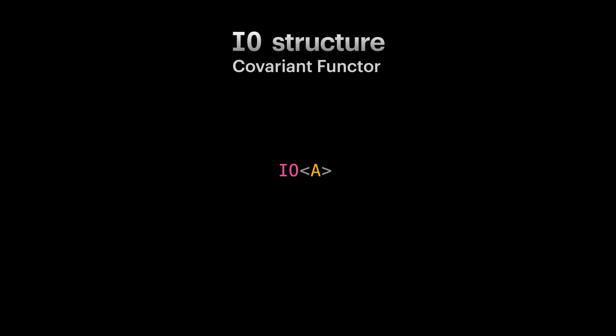Something to realize is IO doesn't error out. It always delivers us a value of type A. If we want to model errors as part of the IO, we need to use either. Now our IO is delivering an either of E and A. Similar to composing functions, can we compose our structures IO and either?